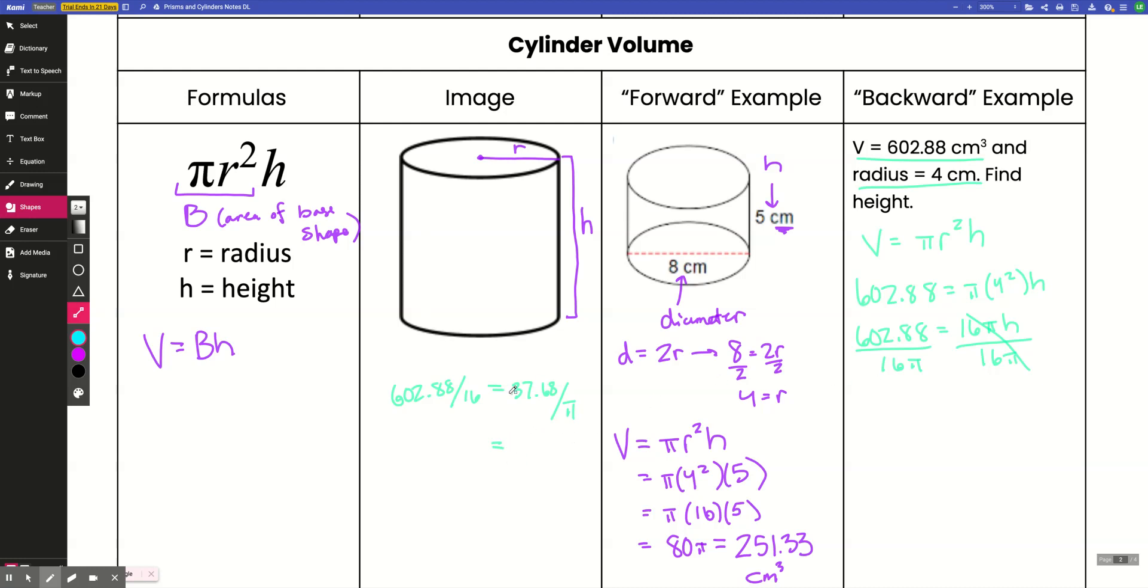So this gives me, when I do 37.68 divided by pi, it gives me 11.99. So I'm just going to round up and say 12. So my height here is 12, and then I need my units. My units are centimeters.